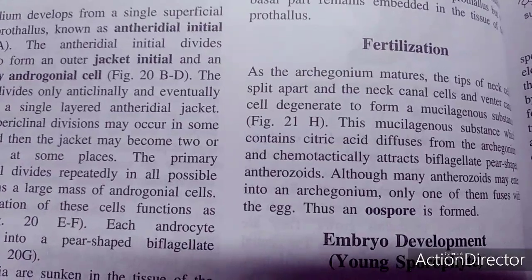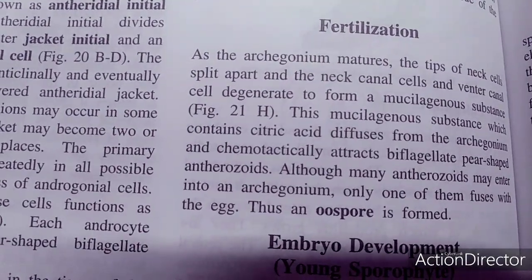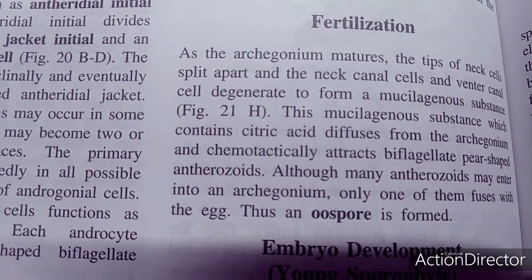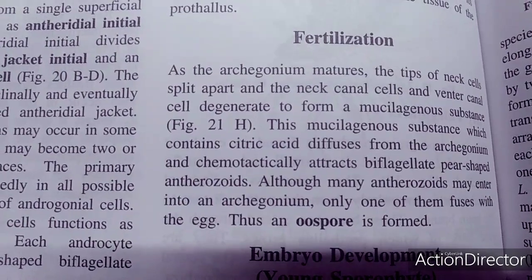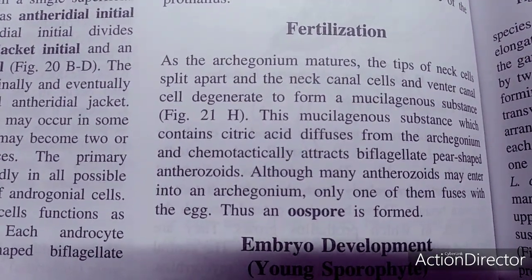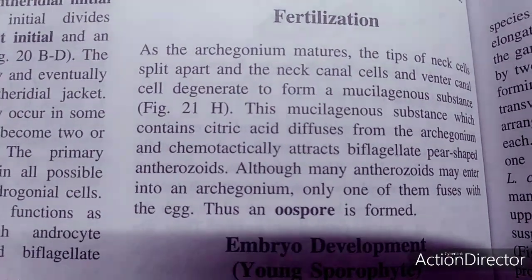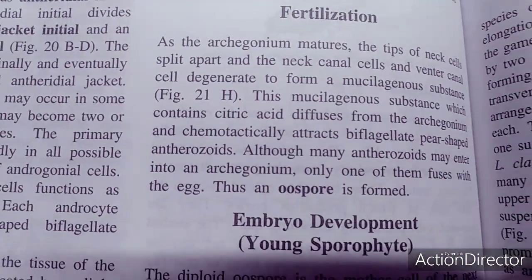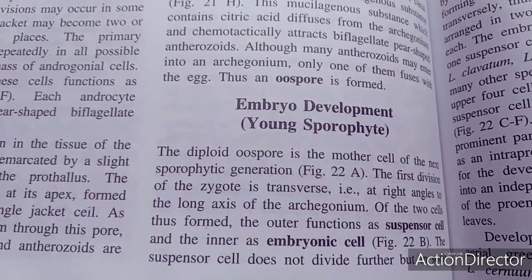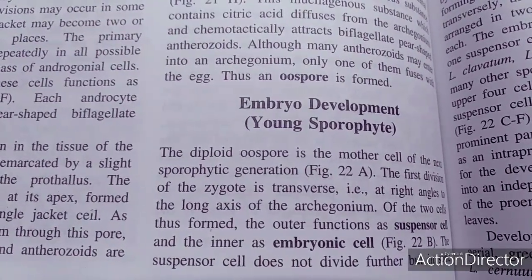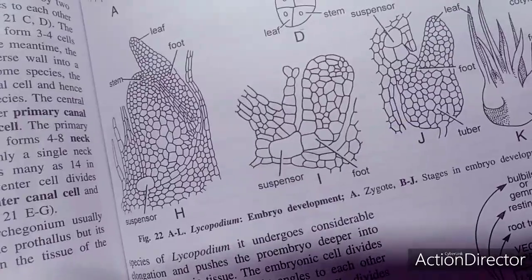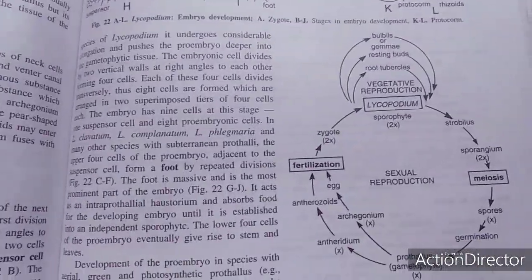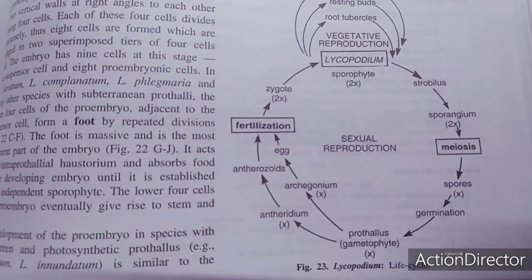Fertilization then takes place. The archegonium matures, the neck canal cell tip splits, and the neck canal cell and ventral canal cell disintegrate to form a mucilaginous structure. The mucilaginous substance with certain cystic acid diffuses from the archegonia, chemotactically attracting biflagellated pear-shaped antherozoids. Although many antherozoids may enter the archegonium, only one fuses with the egg. Oospore formation takes place, and embryo development begins. The zygote develops into the diploid Lycopodium, completing the life cycle.